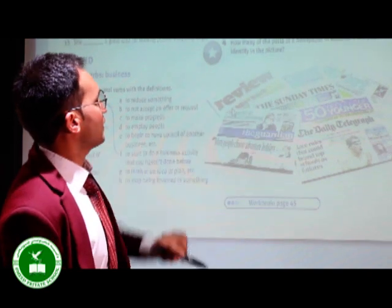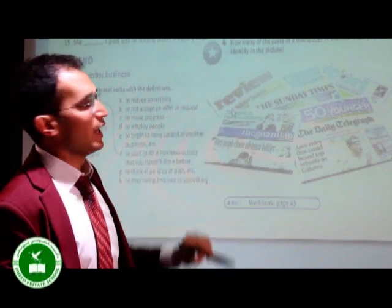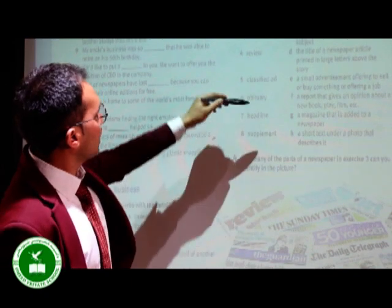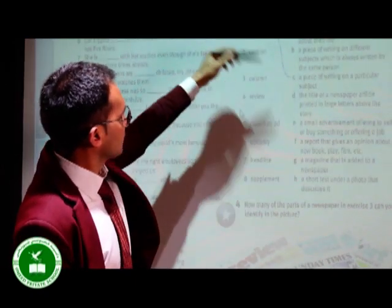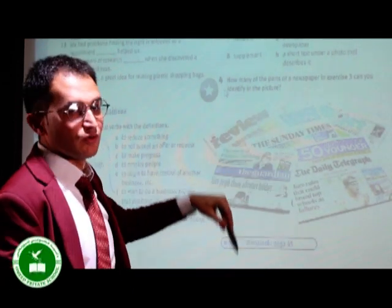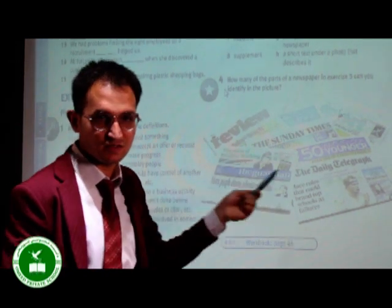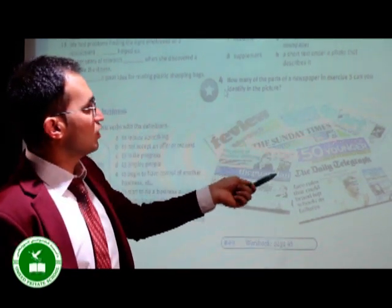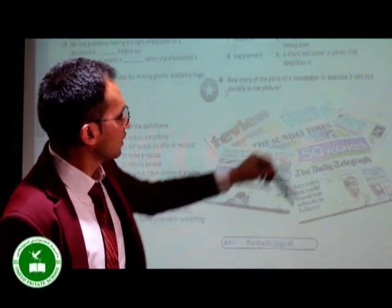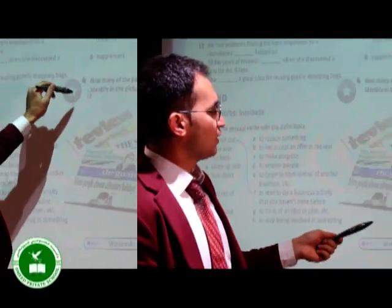Exercise number 4 says that how many of the parts of a newspaper in exercise 3 can you identify in the picture? As you see, in here we have some newspapers and in here we learned some words which are used in magazines and newspapers. Let's see which words are used in here. For example, headline. Yes, the headlines are used in this exercise. This is your homework. Go and find other words which are included in this part or newspaper.